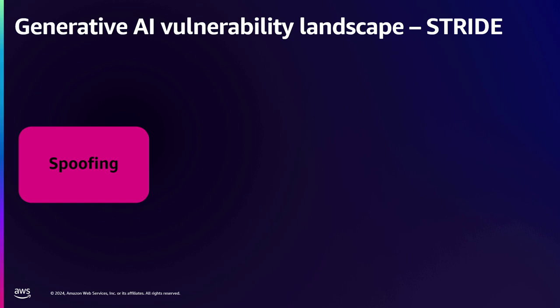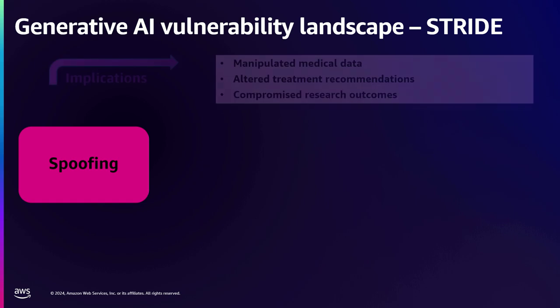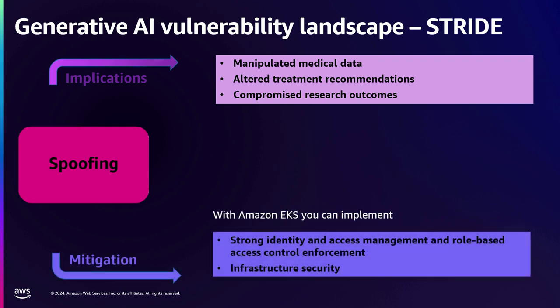As we start looking at the threat landscape for Gen AI, we're going to leverage STRIDE to frame our discussions. The first threat is spoofing — essentially false authenticity. The implications include model hijacking, where attackers could gain control of the generative AI model and use it for malicious purposes, including generating fake content, spreading misinformation, or conducting social engineering attacks. Sai is going to go through mitigation in much greater detail during the walkthrough.